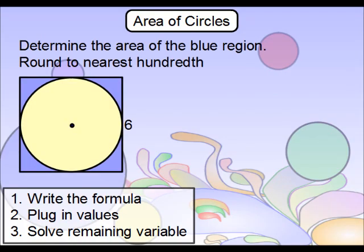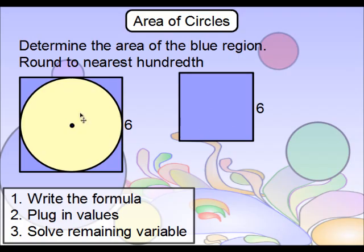Okay, how about we now try another? Let's determine the area of this blue region, and we're going to round our answer to the nearest hundredth. This right here is telling you immediately that you're going to be plugging in 3.14 for pi. You will note that these four blue regions here are created essentially by a square and by a circle that's been removed from it. So that's going to be our strategy here.